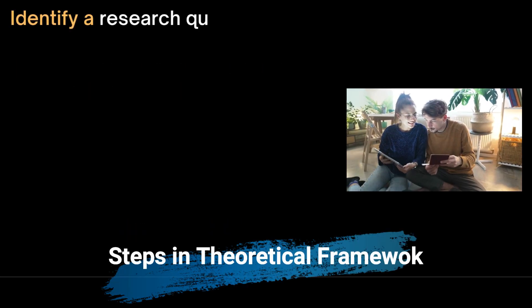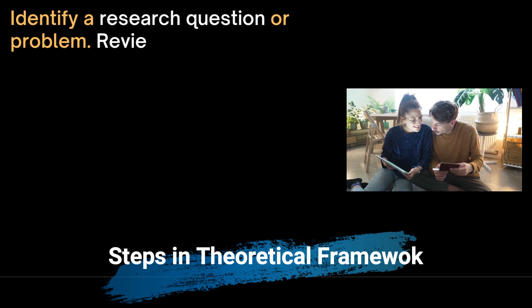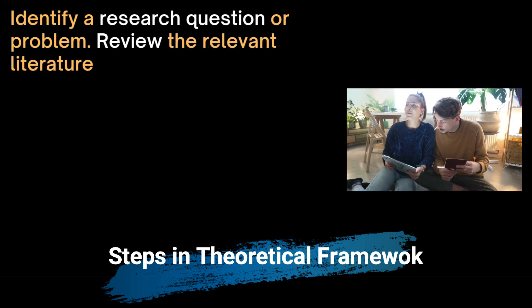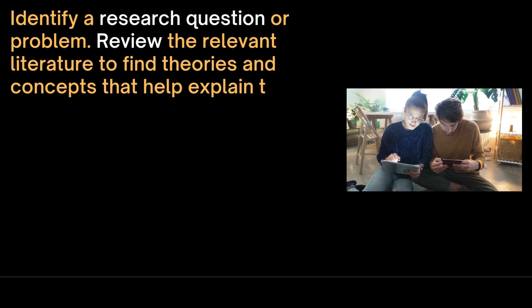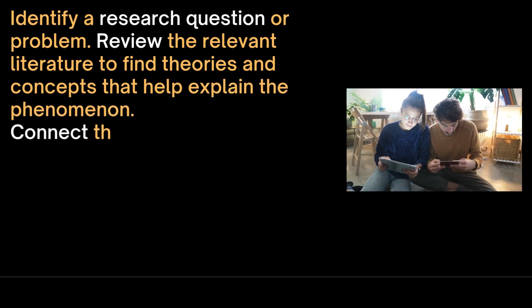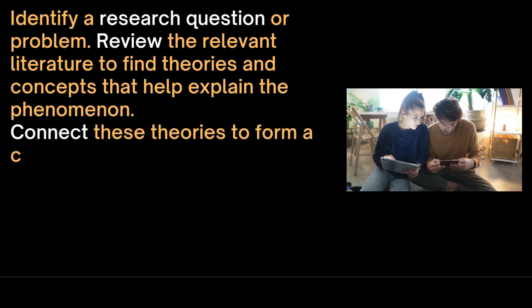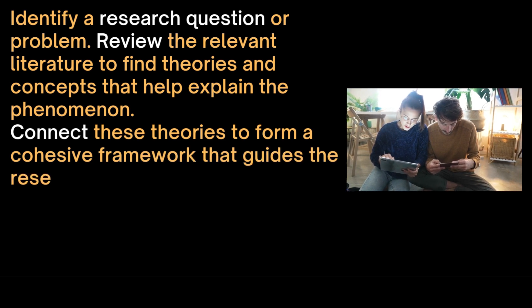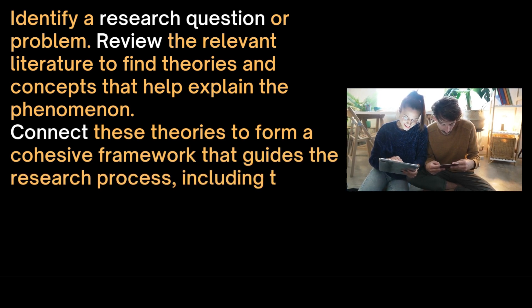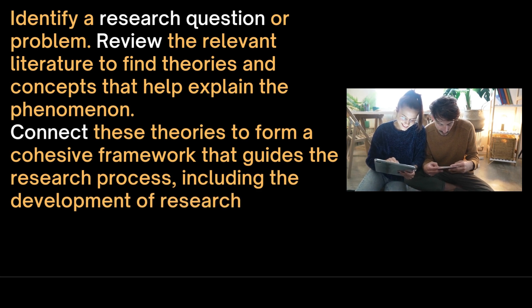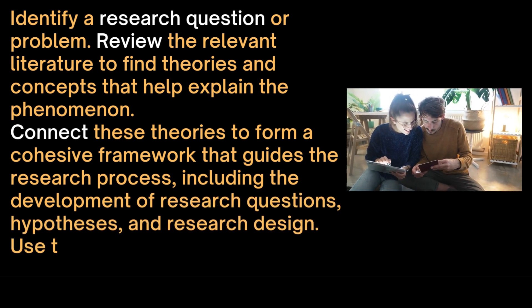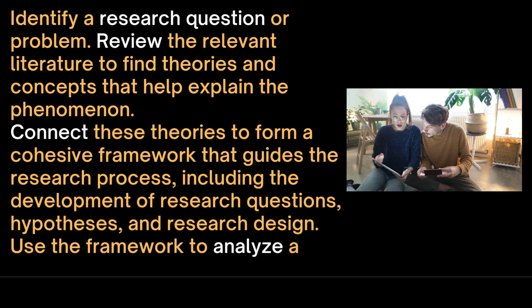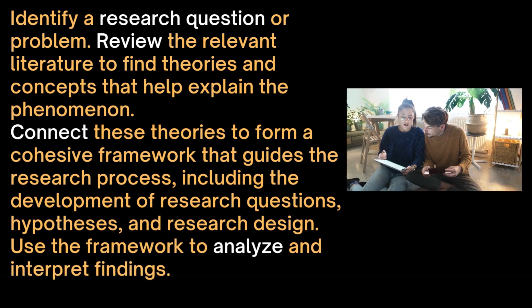The steps are: we first identify a research question or problem, then review the relevant literature to find theories and concepts that explain the phenomena. We then connect these theories to form a cohesive framework that guides the research process, including the development of research questions, hypotheses and research design. We also use the framework to analyze and interpret findings.